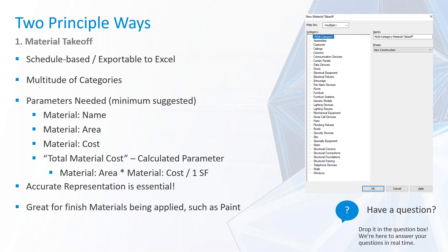One thing to be aware of with a material takeoff is that you really do need accurate representation within your model. Throw out those generic walls and default floors, and get in your two-by-fours or your metal studs with some gypsum. One of the great things this is actually really useful for is if you are applying materials as a paint in Revit — a true example being physical paint that you would be painting your walls with. If you need to understand how many gallons you are needing, this is a great way to look at that.